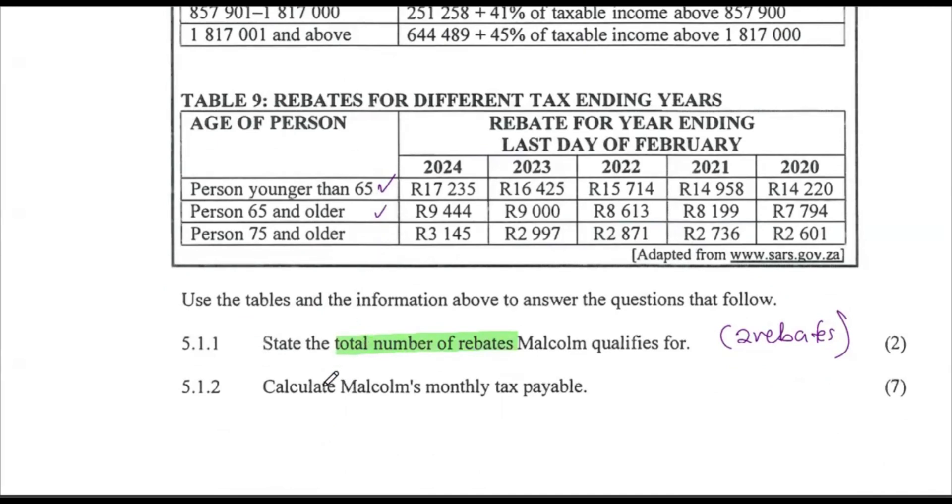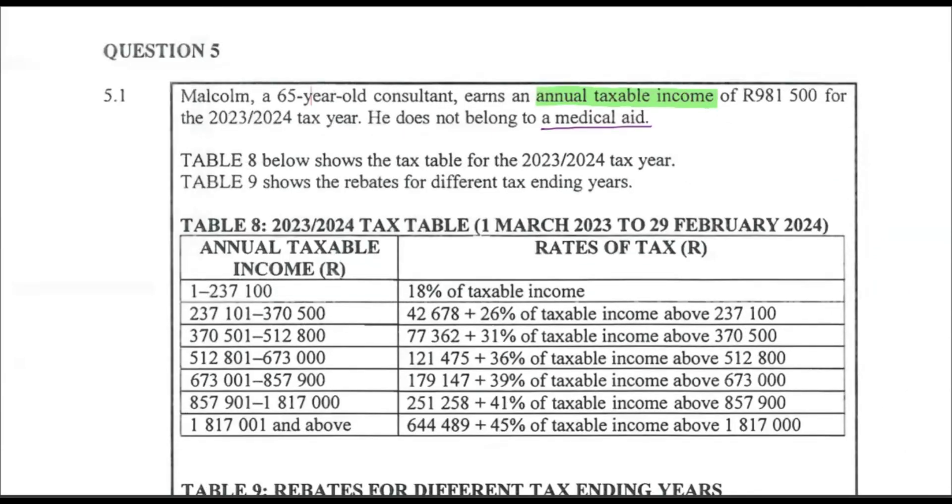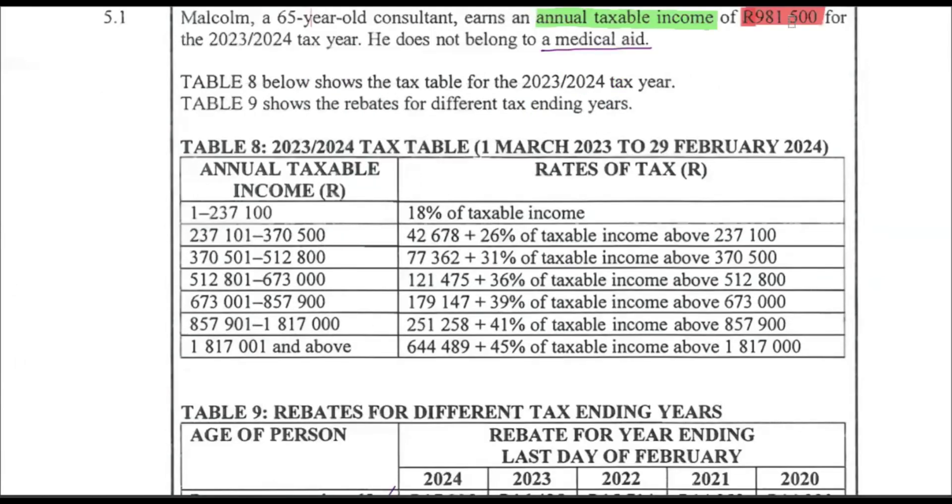Calculate Malcolm's monthly tax payable. We are looking at tax payable now. It will come from the table we've seen above. First and foremost, to get the money he earns, we're looking at R981,500. Since we're looking for tax, which bracket does it belong to? We come to this table here. R981,500 belongs to this bracket, so we shall write this down.